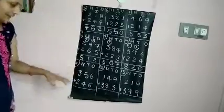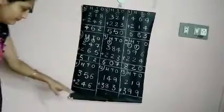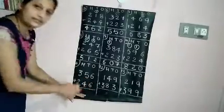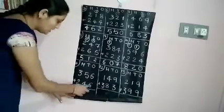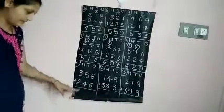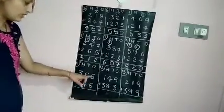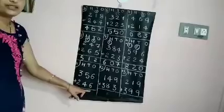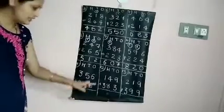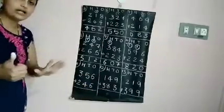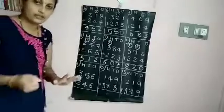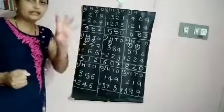Next, let us see problem 11. We have 356 plus 246. In the ones column we have 6 and 6. 6 plus 6. 6 in your mind, 6 in your hand. 6 after: 7, 8.